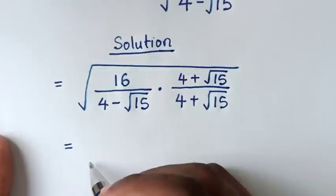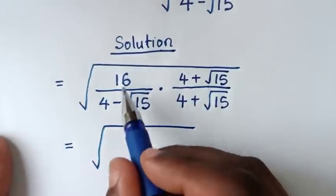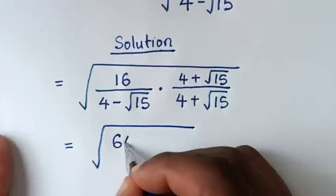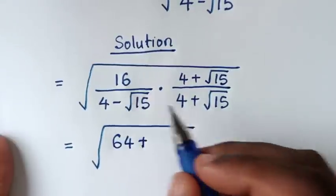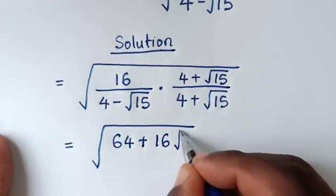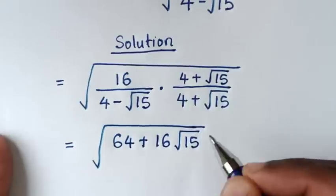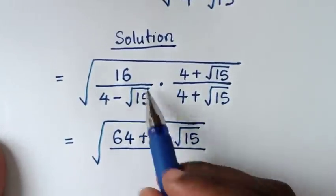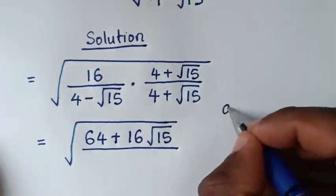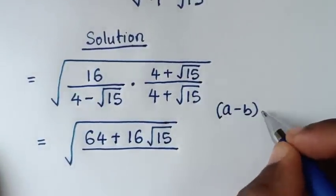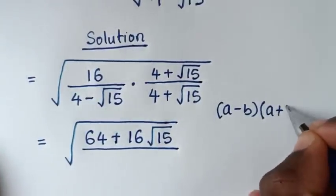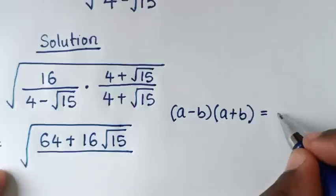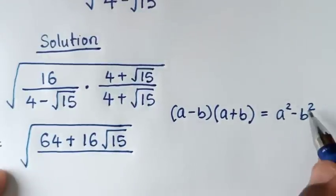It will be equal to square root of this times this, so it will be 16 times 4 is 64, plus 16 times square root of 15, which is 16 square root of 15. Then over — from here in the denominator, this times this is in the form of (a minus b)(a plus b), which is a perfect square equal to a squared minus b squared.